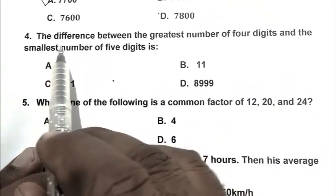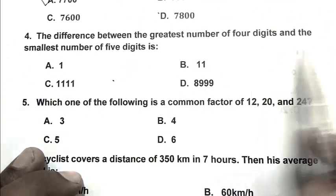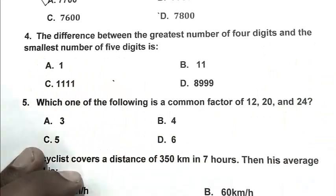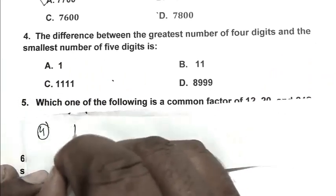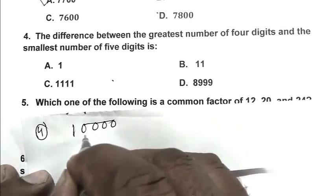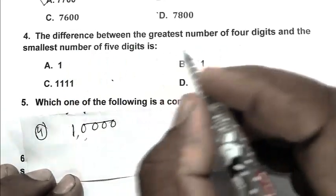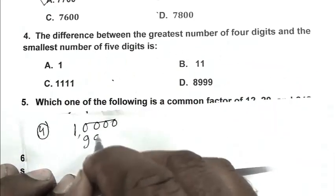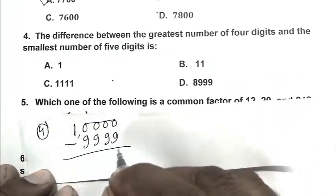Question number 4: The difference between the greatest number of 4 digits and the smallest number of 5 digits is? So first we write the smallest number of 5 digits, that is 10000. After that we write the greatest number of 4 digits, that is 9999. We subtract it, we got 1. So A is the right answer.